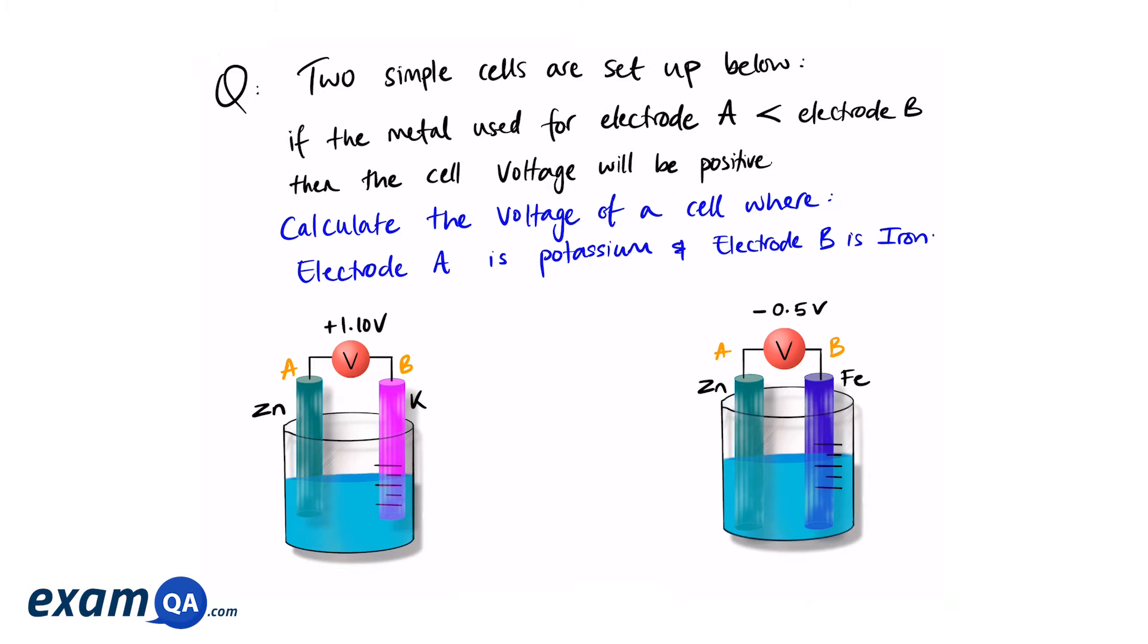So to answer this question, what we're going to do is look at the information given to us in the question and create a scale of reactivity. So for example, looking at the first cell, the one on the left, we can see that electrode A is made of zinc. So we can say A is made of zinc and electrode B is made of potassium.